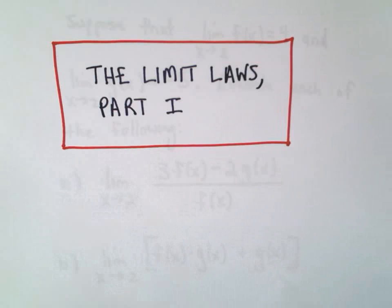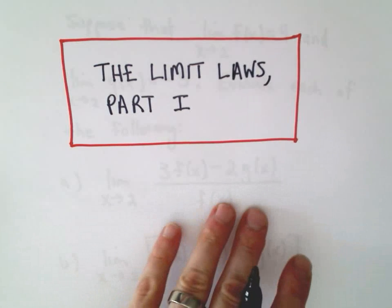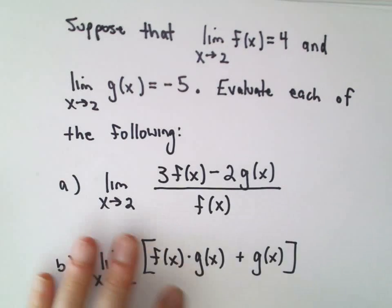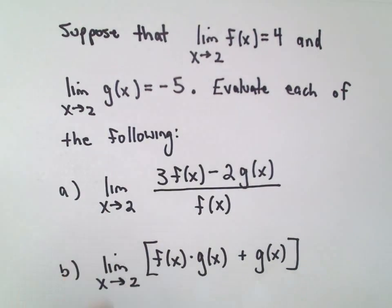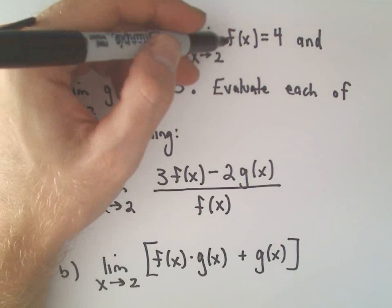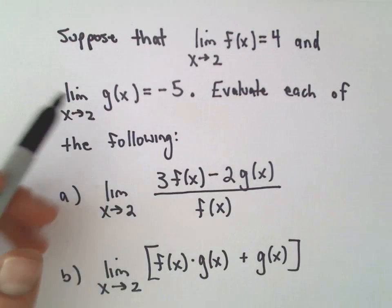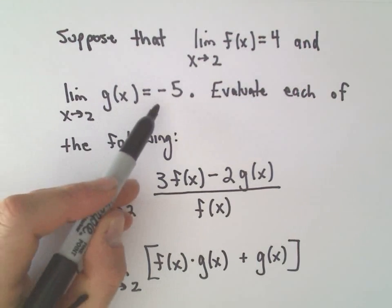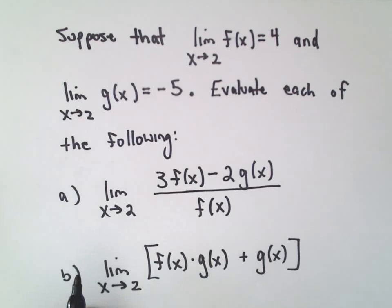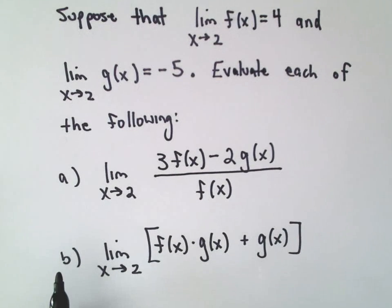In this video we're going to look at an example related to the limit laws. Just a couple problems here. Suppose that we're given that the limit as x approaches 2 of our function f of x equals 4, and the limit as x approaches 2 of g of x equals negative 5. We want to compute each of these following limits.